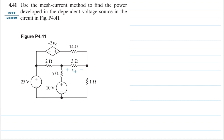Hello, my name is RD and we are going to solve problem 4.41 from the Nielsen and Riddle book. The question is: use the mesh current method to find the power developed in the dependent voltage source. This is the only dependent voltage source in the circuit, and we are asked to use the mesh current method.